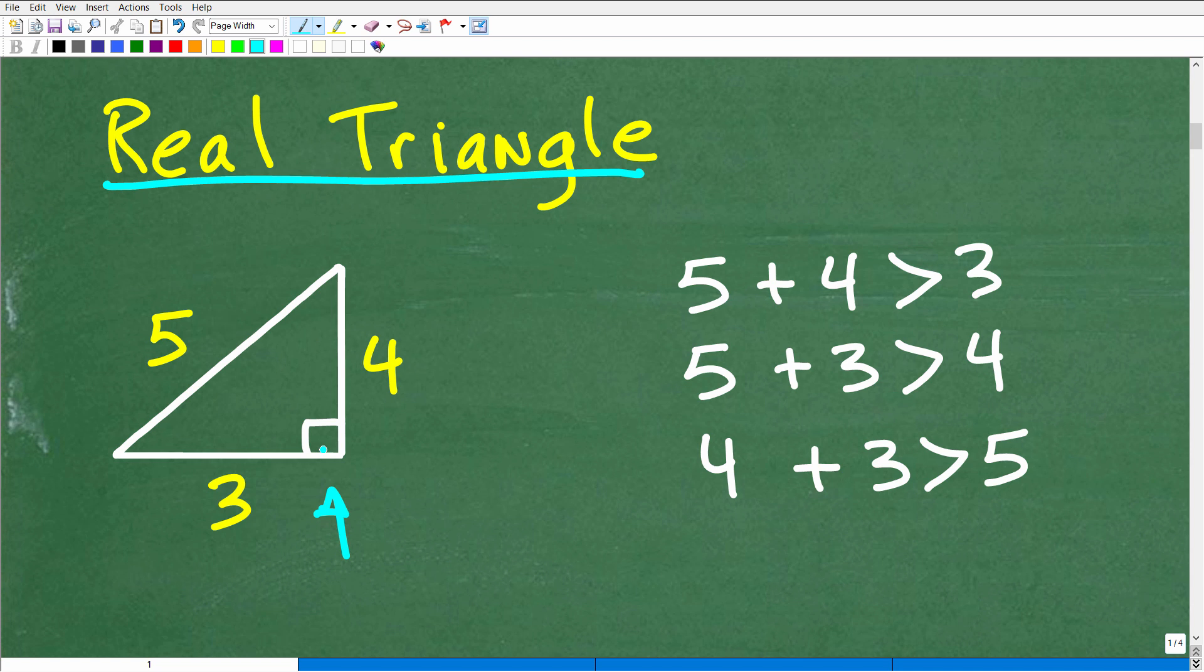It just happens to be a right triangle. But we can form an actual real right triangle with lengths 3, 4, 5. And if you wanted to verify that, you can use the Pythagorean theorem. But this is what we call a Pythagorean triple. So 3, 4, 5. This is, in fact, a real, real triangle.